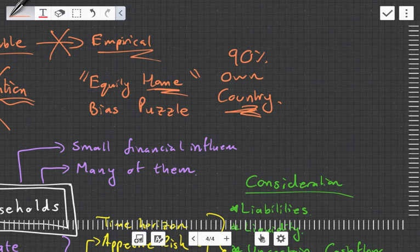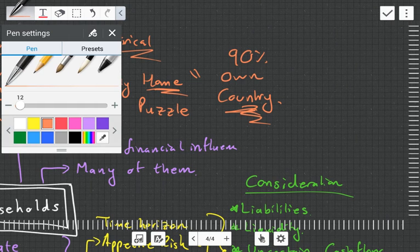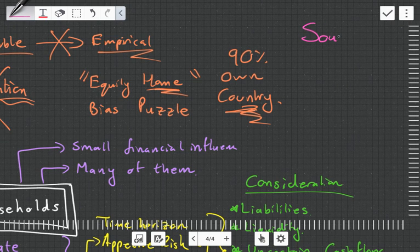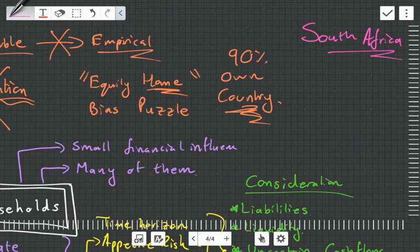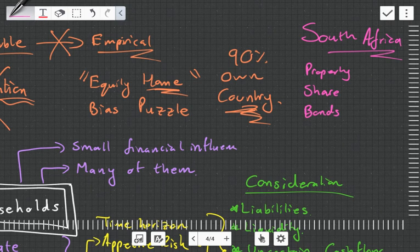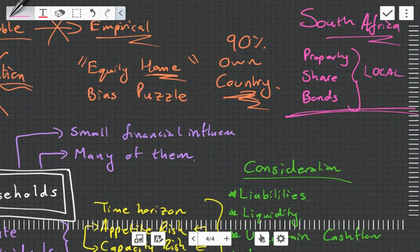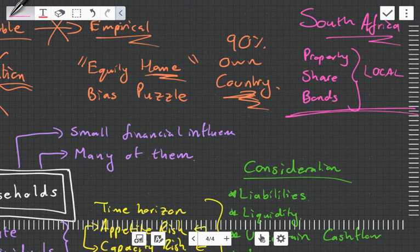The equity home bias puzzle basically says the evidence contradicts the statement. When they look at populations of various countries, they see that people's investment habits tend to invest in their home country. They find that something like 90% of an individual's wealth is in their own country. That's a little bit crazy. Let's talk about South Africa. I know a lot of friends and family, when they talk about diversification, they're thinking of their own property, shares in the Johannesburg Stock Exchange, maybe bonds that the South African government issues—it's all local. Very few of them have any international assets.